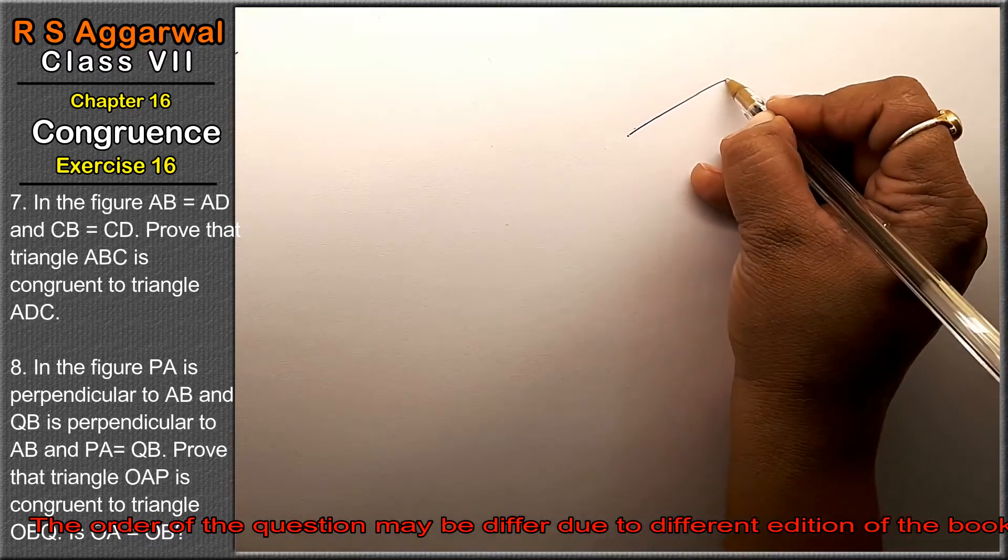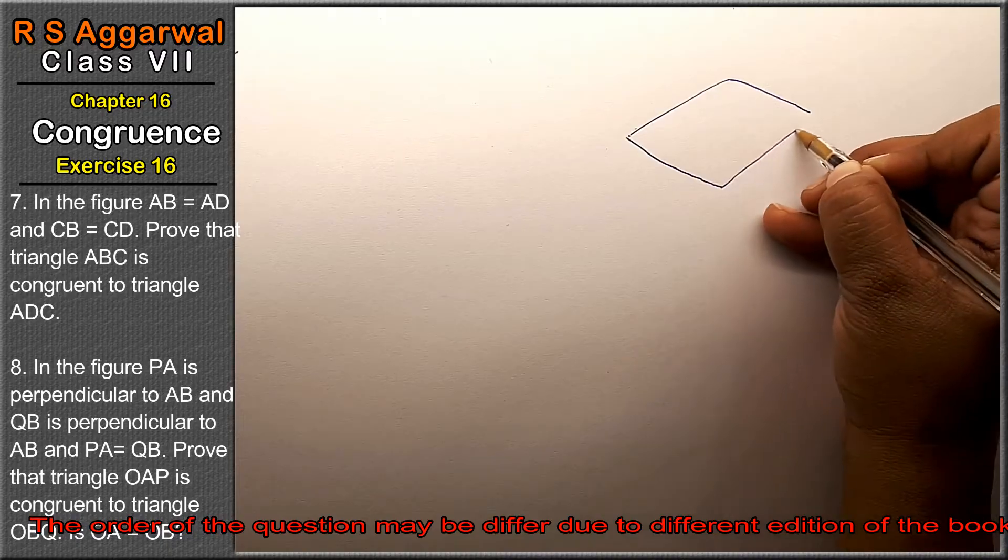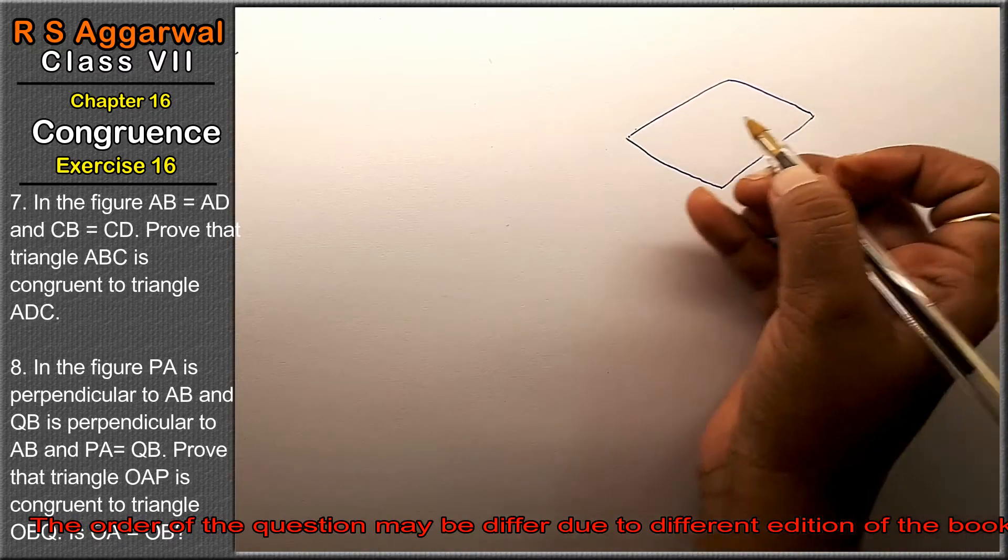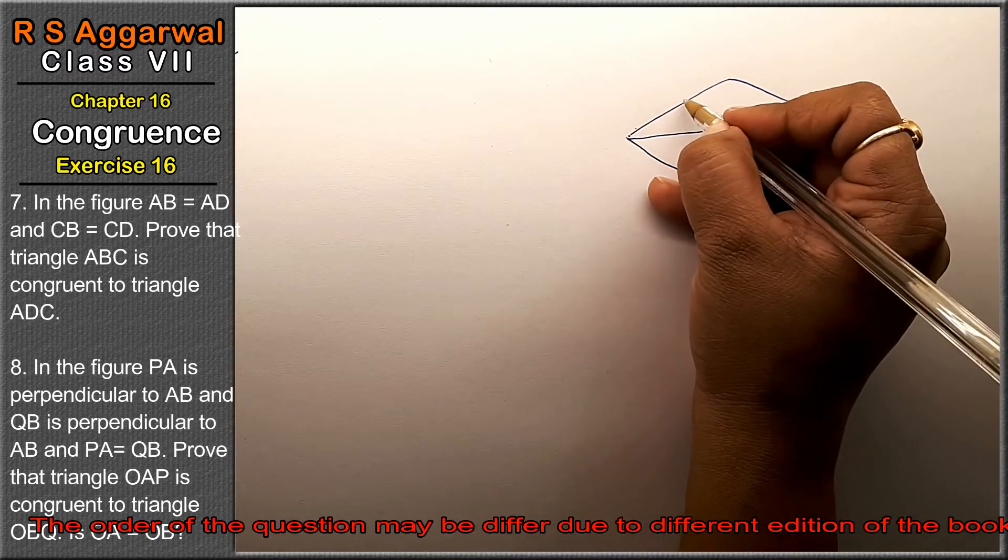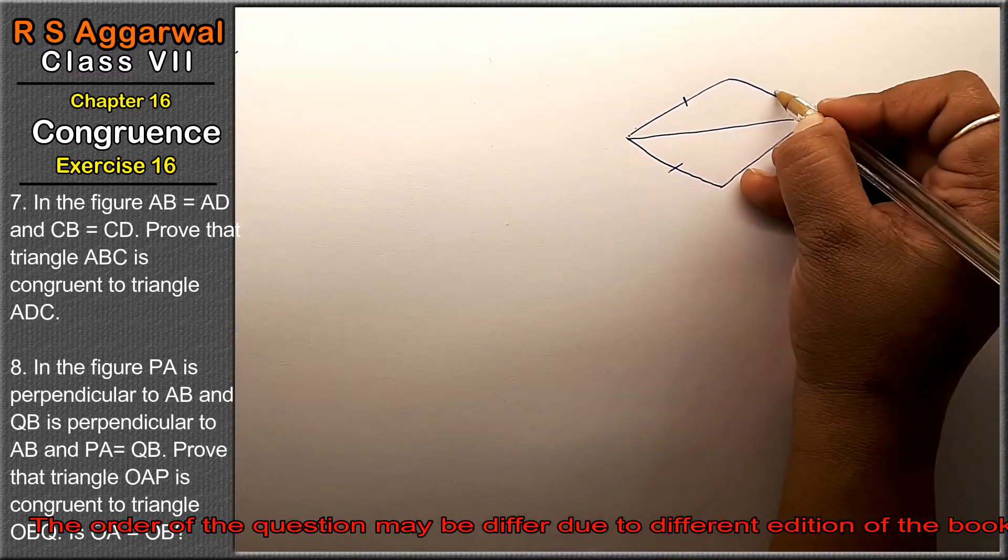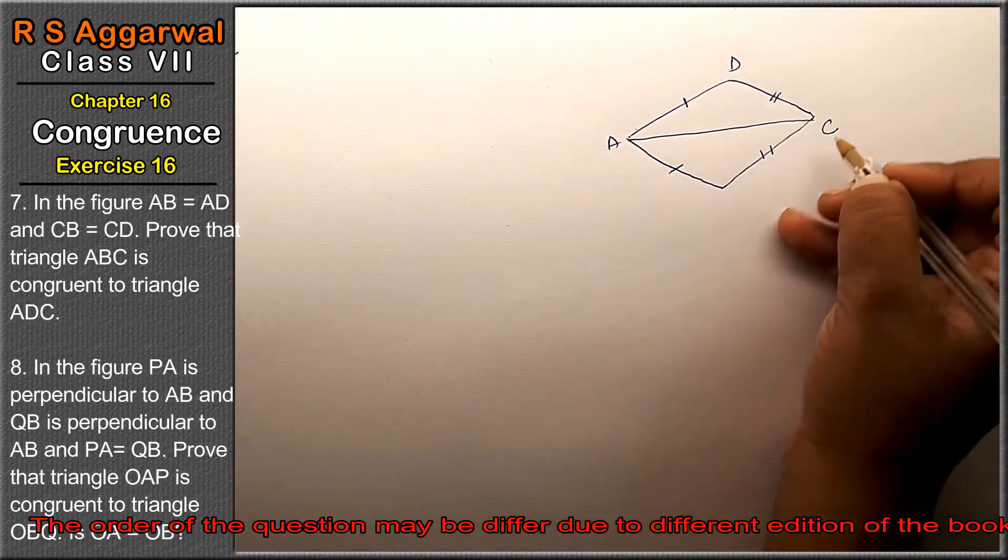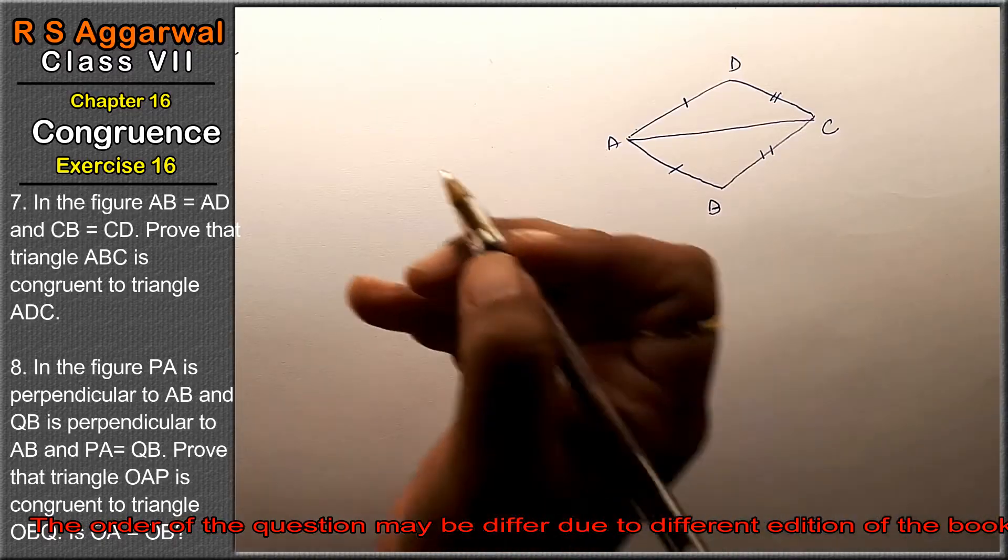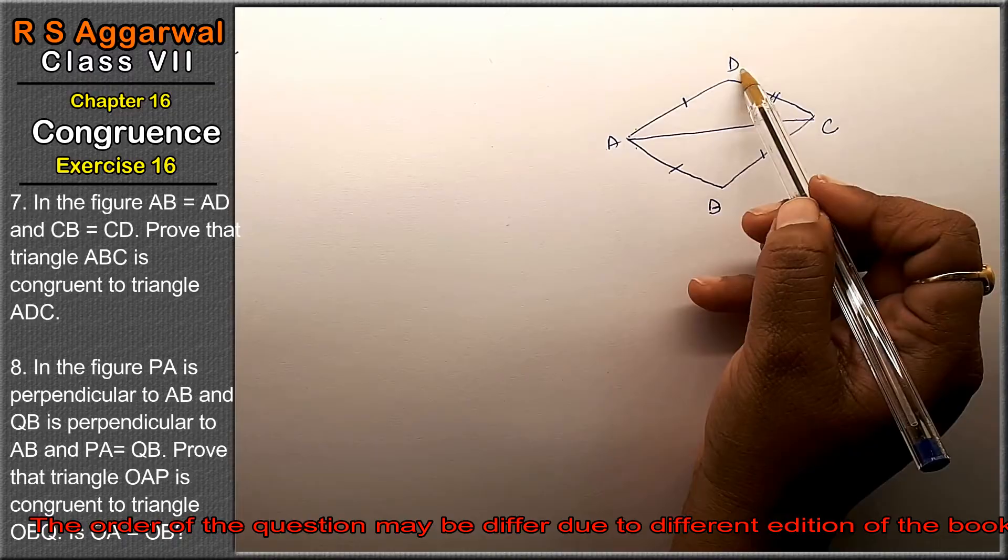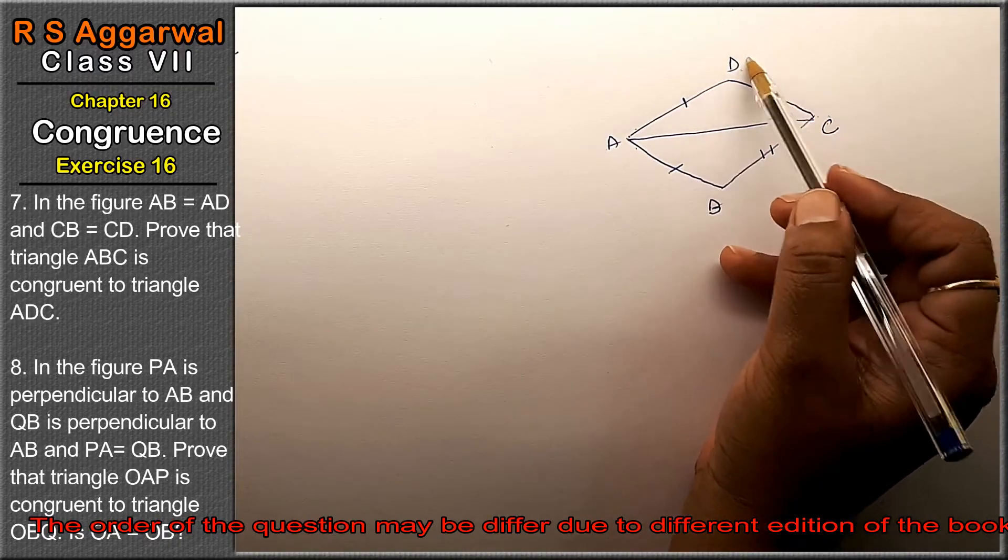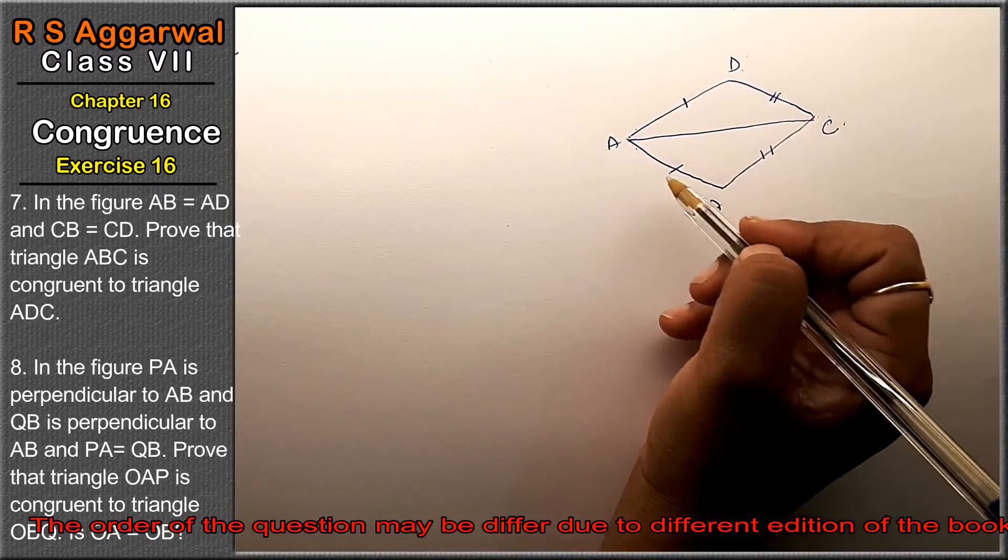In the joining figure ABC and ADC, AB equals AD and CB equals CD. Prove that triangle ABC is congruent to triangle ADC.